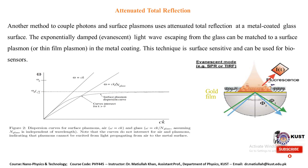We can also use attenuated total reflection (ATR) to couple photons and surface plasmons. This is done at a metal-coated glass surface, where exponentially damped light waves escaping from the glass can be matched to a surface plasmon in the metal coating. This technique is surface sensitive and can be used for biosensors.